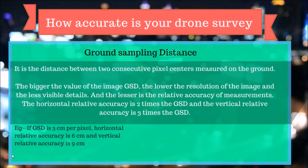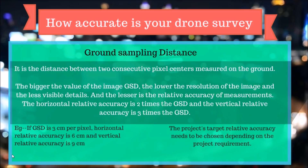For example, if GSD is 3 centimeters per pixel, the horizontal relative accuracy is 6 centimeters and the vertical relative accuracy is 9 centimeters. The project's target relative accuracy needs to be chosen based on project requirements, so when explaining accuracy to your customer, first assess what type of accuracy they need and to what extent, which will help you plan the flight and process the images accordingly.